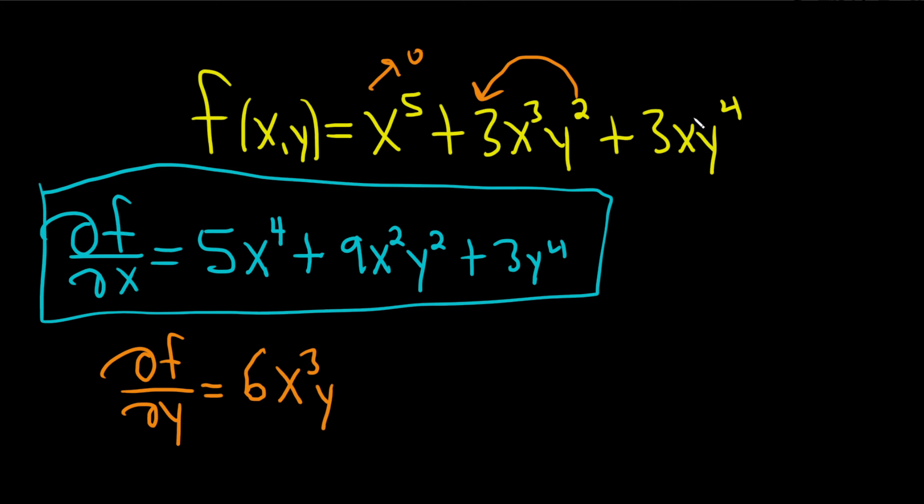And then here, again, this piece hangs out. So we get 4 times 3, which is 12. And then x. And then 4 minus 1 is 3. So we get y cubed.